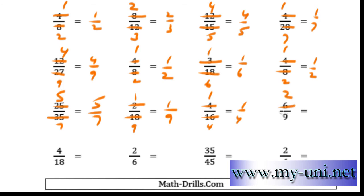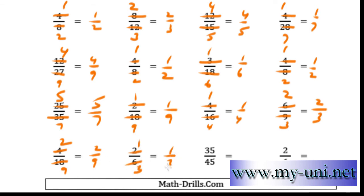3 times 2 is 6 and 3 times 3 is 9, so 2 over 3 is the answer. 2 times 2 is 4 and 2 times 9 is 18, giving 2 over 9. 2 times 1 is 2 and 2 times 3 is 6, so 1 third is the answer. 5 times 7 is 35 and 5 times 9 is 45, so 7 over 9. 2 times 1 is 2 and 2 times 3 is 6, so 1 over 3 is the answer.